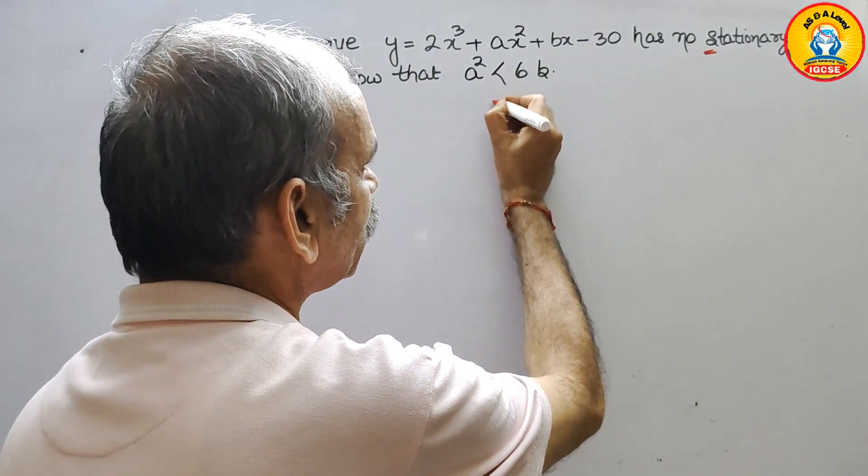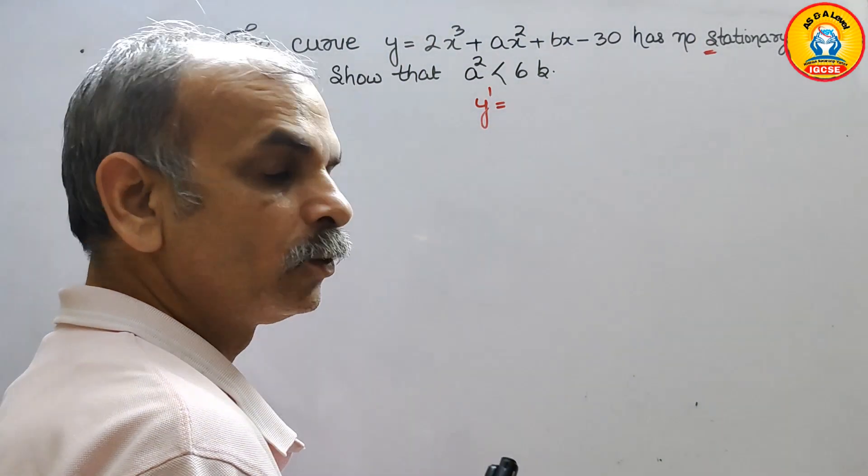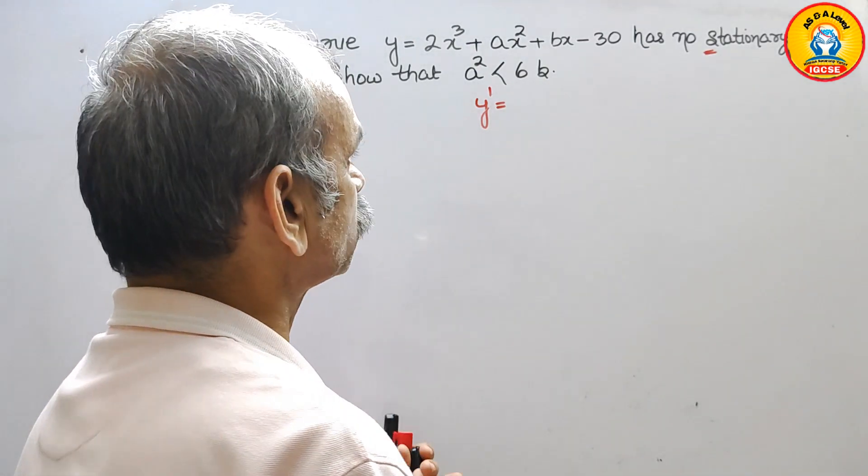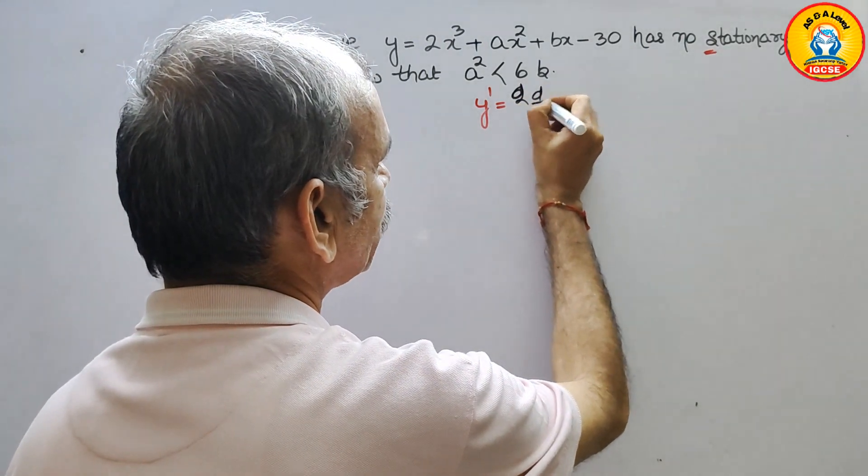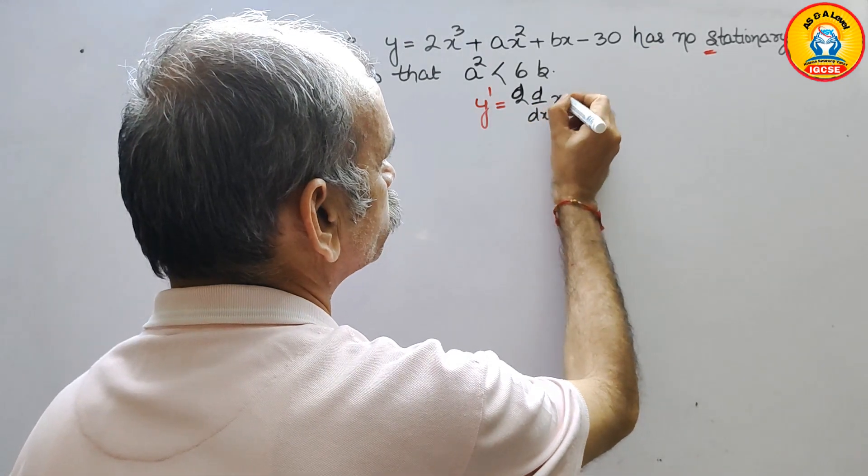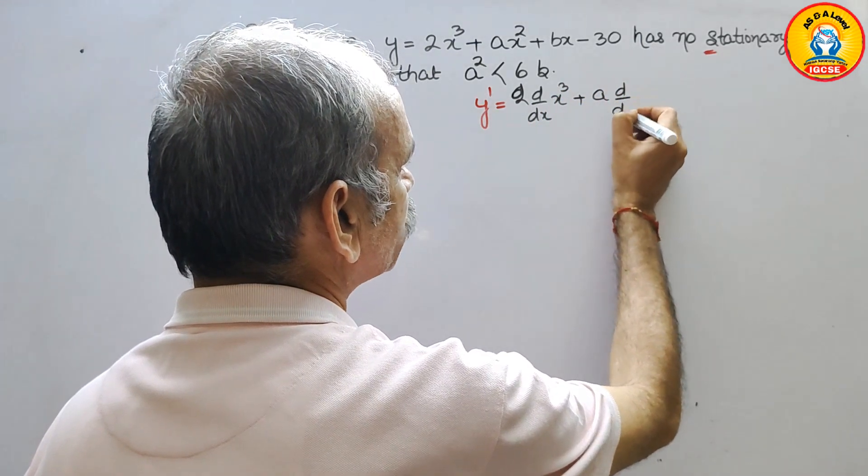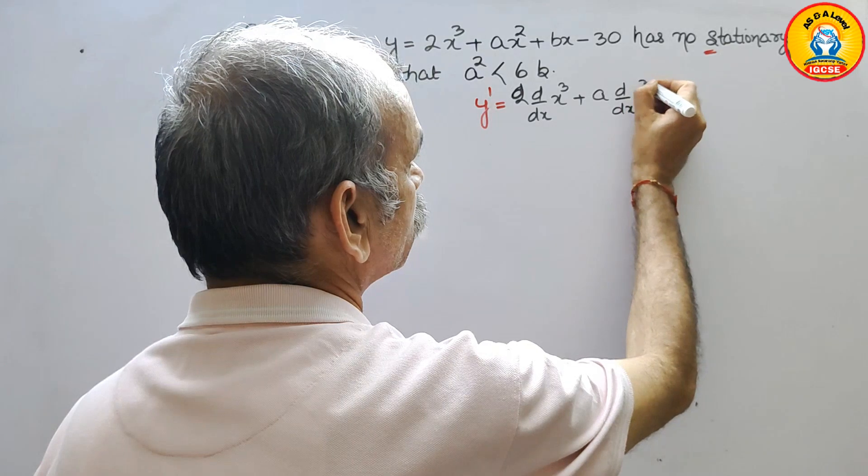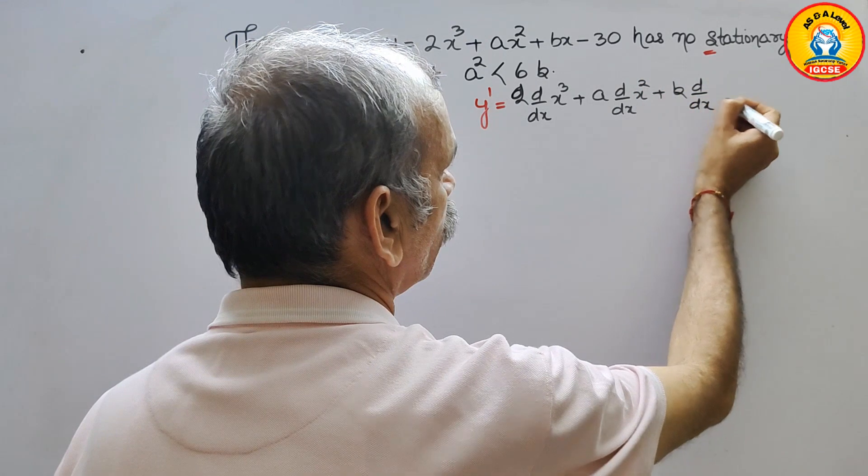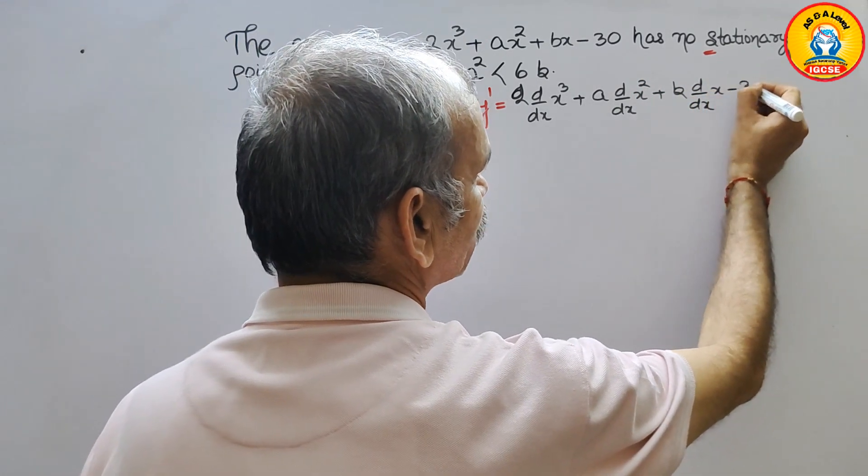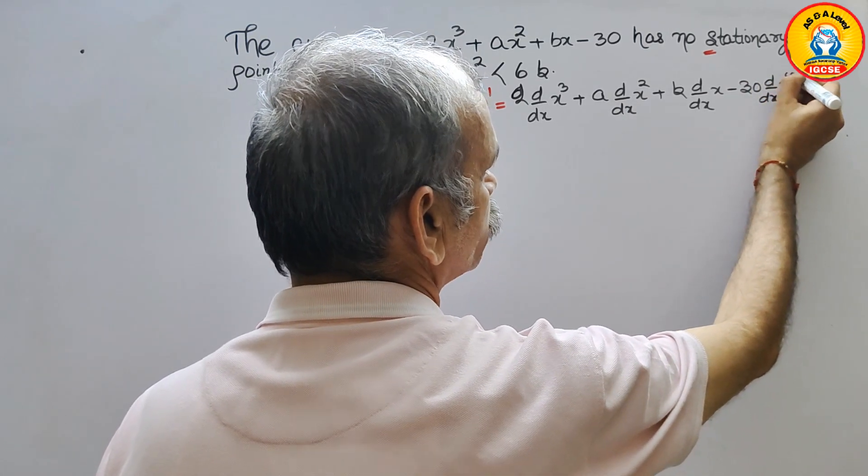That means it will be y dash is equal to 2 d/dx of x³ plus a d/dx of x² plus b d/dx of x minus 30 d/dx of x to the power of 0.